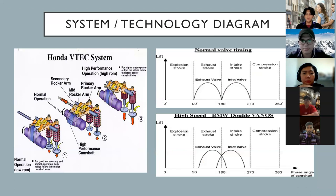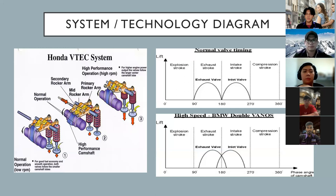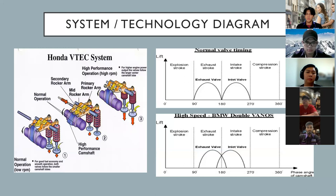Thank you Jimmy. Hi, my name is Loh. Today I will present the system technology diagram. I will explain how the VTEC system operates at low RPM and high RPM. In the first diagram, at low RPM for good fuel economy and smooth operation, both valves follow the smaller cam lobe. At high RPM for higher engine power output, the valves follow the larger standard cam lobe.